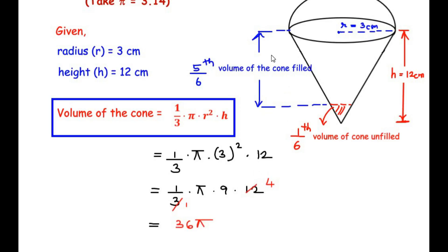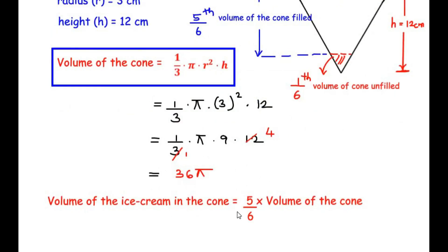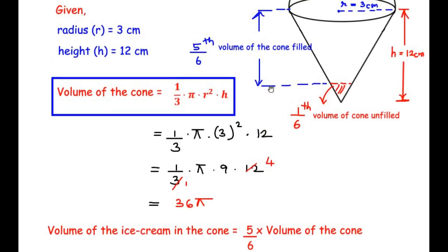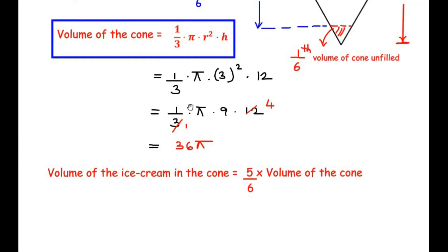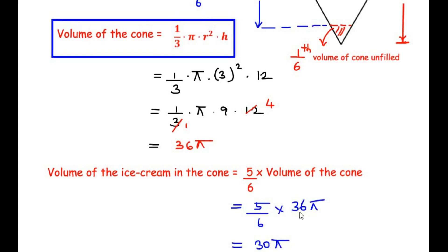The volume of ice cream in the cone is (5/6) × 36π. Since 36 divided by 6 equals 6, we get 5 × 6π = 30π cm³.